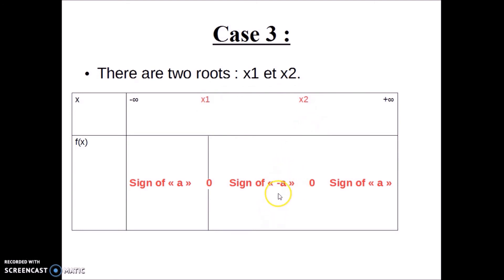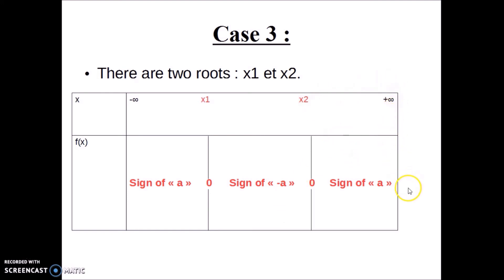And x2 gives 0 also. From x2 to infinity, it's the sign of a. So the sign table reads: sign of a, 0, sign of negative a, 0, sign of a.